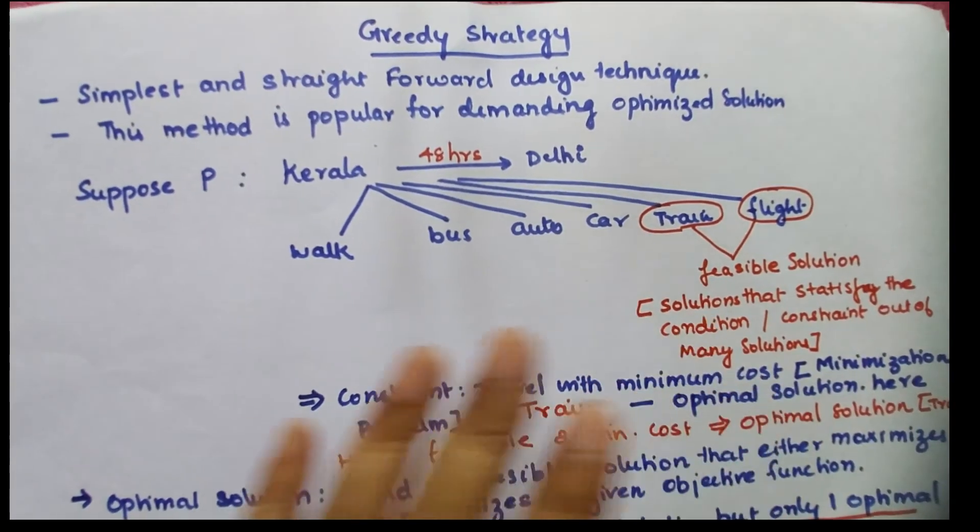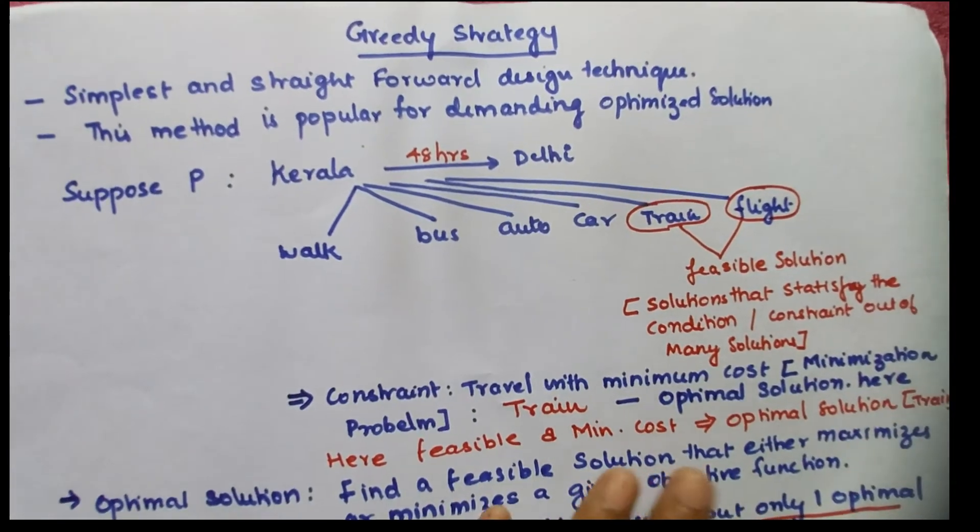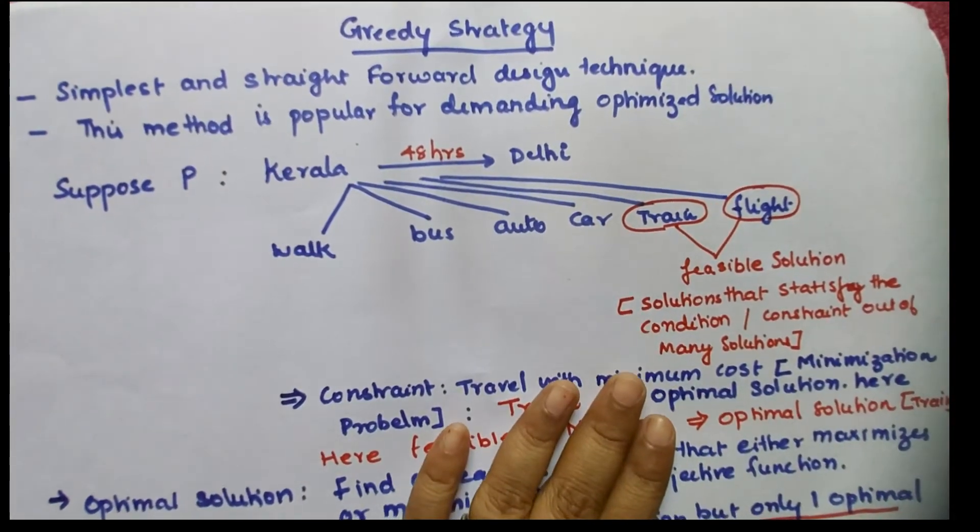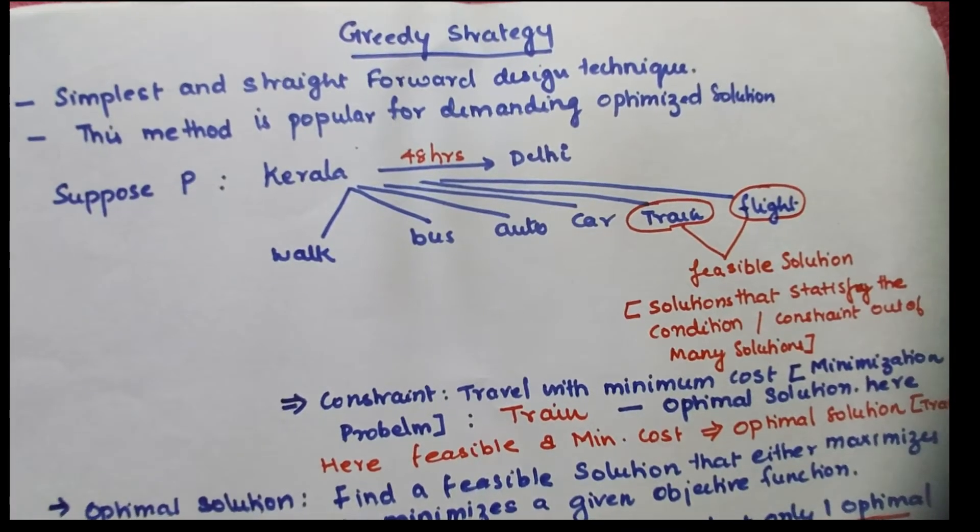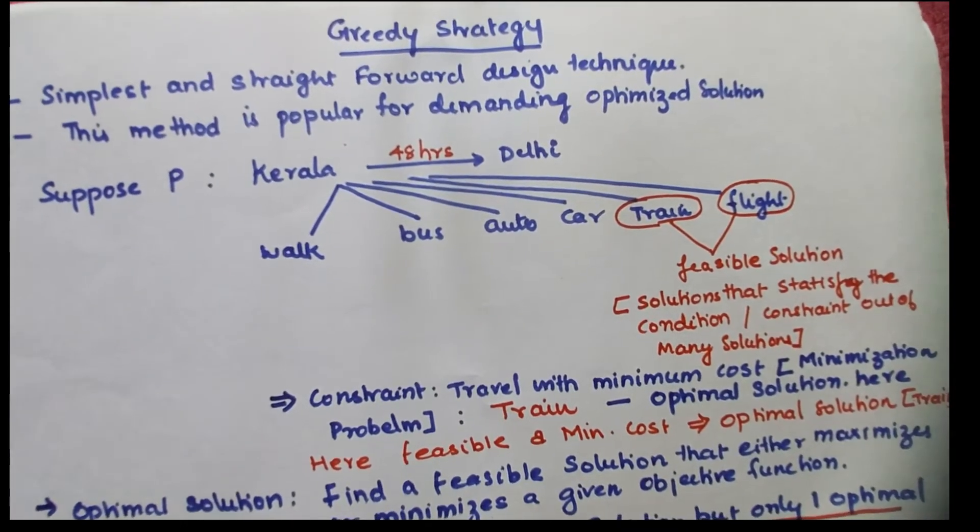You are given many solutions to go to Delhi from Kerala. From those solutions, you have to find out the one which satisfies your condition - you must reach within 48 hours.